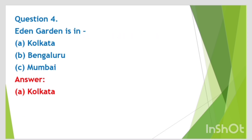Question 4: Eden Garden is in — options are Kolkata, Bengaluru, Mumbai. Answer is Kolkata.